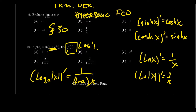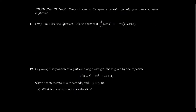Moving on to the free response section, question number 11 will be asking you to provide a proof of some derivative rule. The example provided in this practice test is: verify that the derivative of cosecant equals negative cotangent times cosecant.